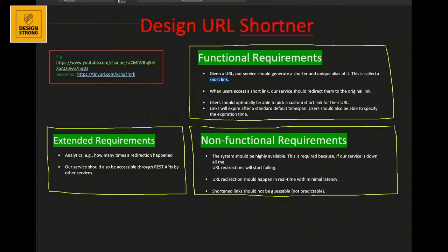To design a URL shortener, we need to understand the requirements. The first functional requirement is: when given a URL, the service should be able to generate a short URL or alias for it. Second, when a user clicks on the short link, the URL shortener should redirect them to the original URL. Third, users should have the option to create a custom URL, such as https://tinyurl.com/designstrong.